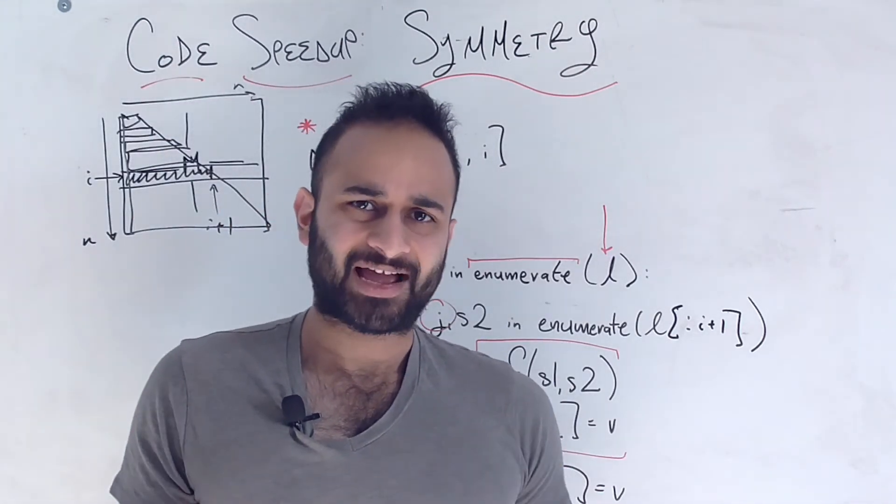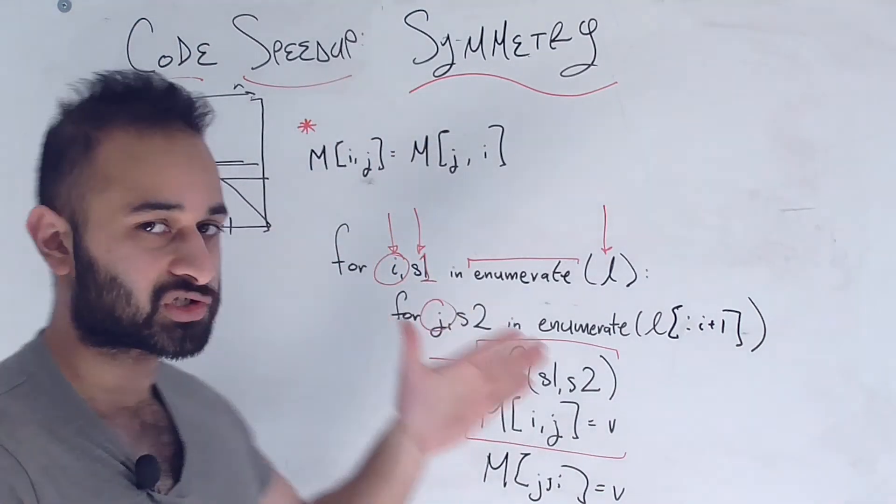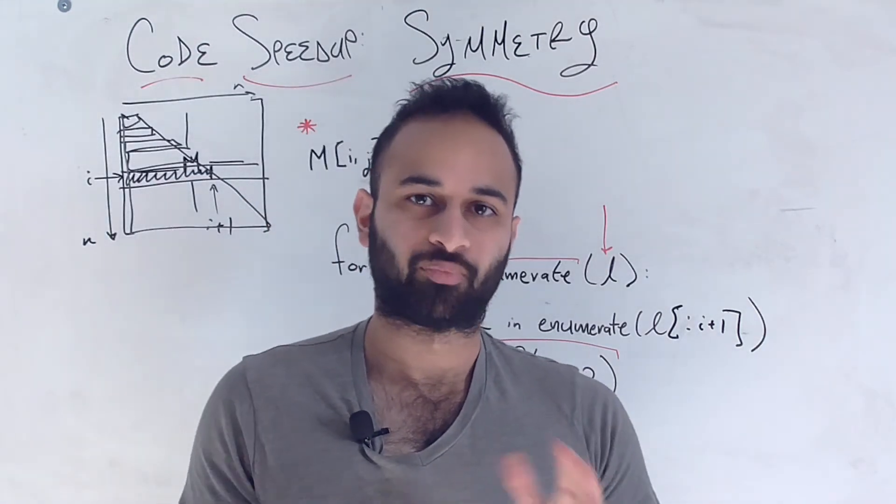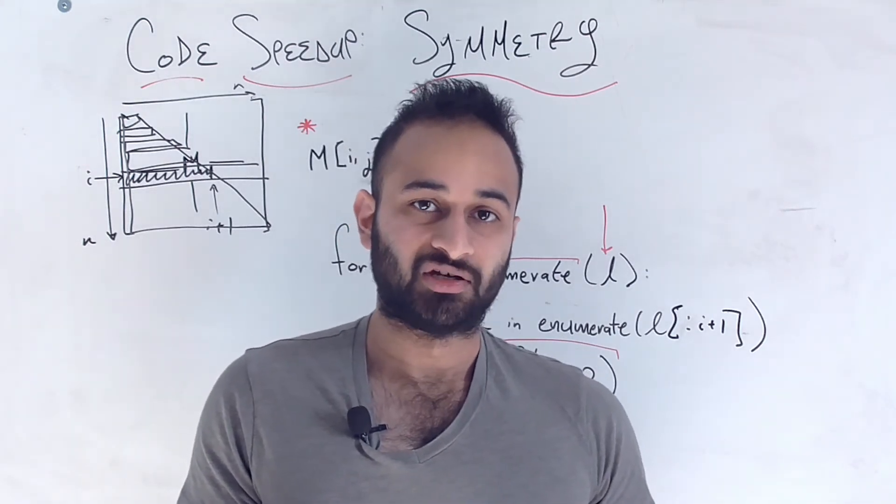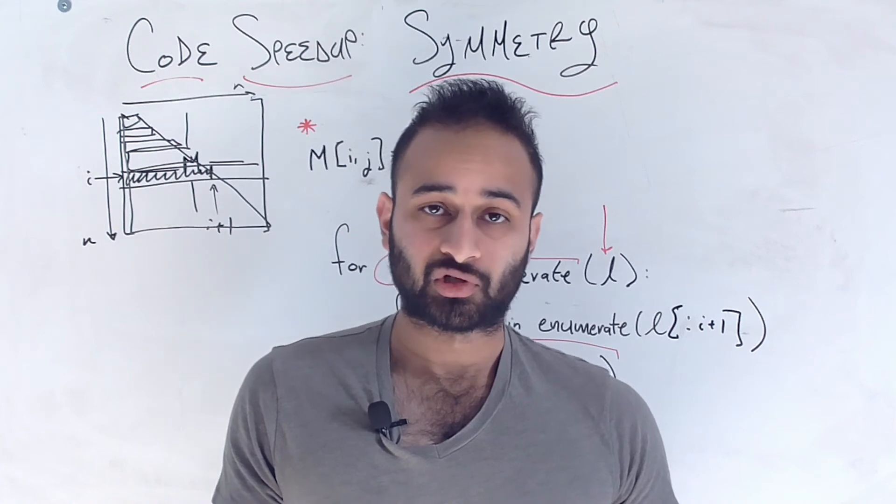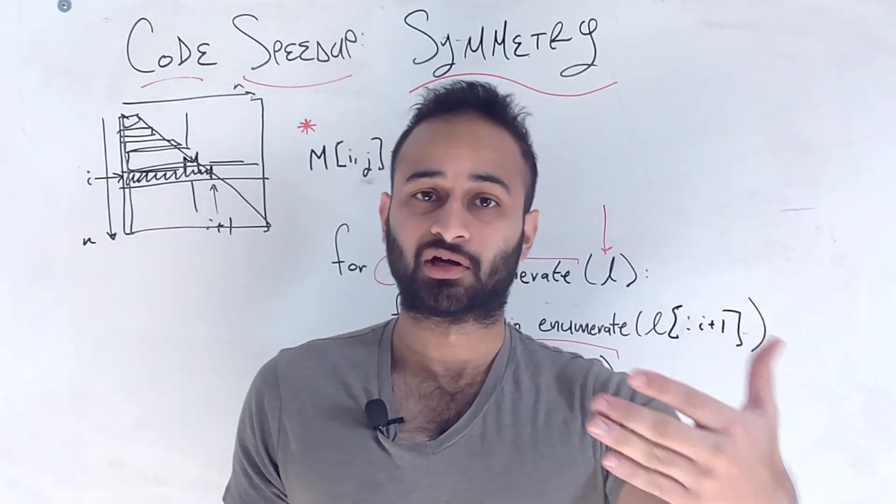And that's going to cut our work about in half. As we'll see, it's not exactly in half because we still have to compute the diagonal. So the diagonal kind of breaks the symmetry a little bit. But we'll see that we get almost a double speedup by doing this technique. Okay, so don't take my word for it. Let's go ahead and take a look at the code.